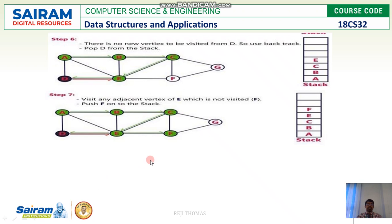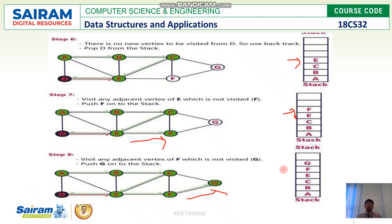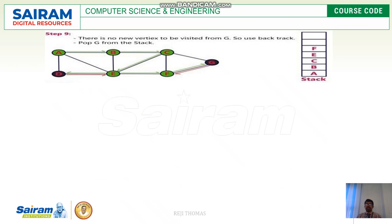Now E is at the top of the stack. For E, find an adjacent vertex which is not visited — that is F. Push F into the stack. Next, visit any adjacent vertex of F which is not visited. From F there is a vertex G which is not visited; push G into the stack. The stack now has six elements. There are no vertices to be visited from G, so backtrack and pop G from the stack.